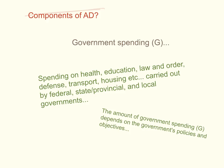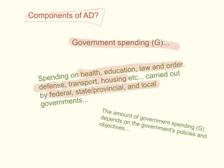The third component of Aggregate Demand is government spending (G). This includes spending on health, education, law and order, defence, transport, housing, and all other areas that all branches of government — federal, state, provincial, and local — spend their money on. The amount of government spending in the economy will depend on the government's policies and objectives, which we'll discuss later in the series.